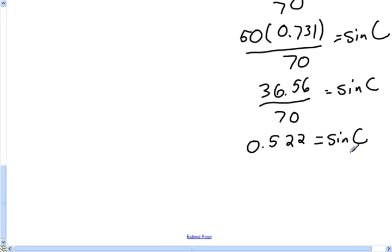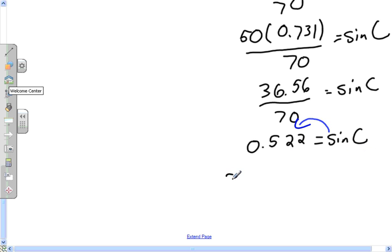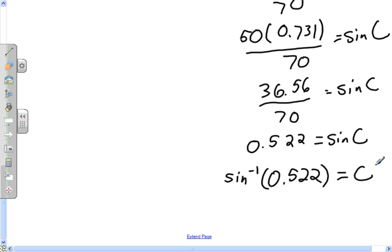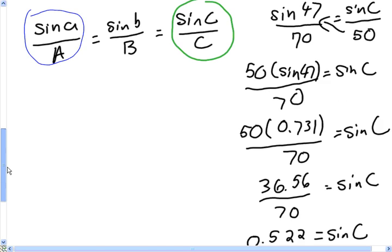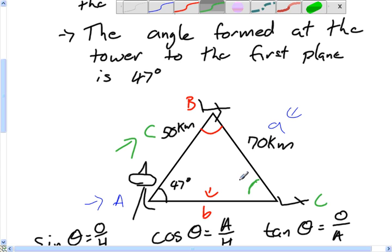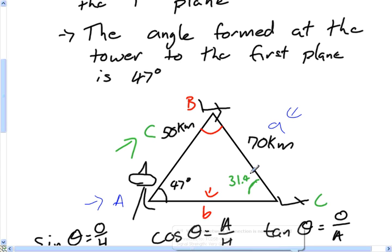I still have to isolate for Angle C, which means I need to bring Sign to the other side of the equation. So when I bring Sign to the other side, it is Sign inverse, Sign to the negative 1. Make sure you guys type that in when solving for an angle on your calculator. We use the inverse of Sign. So inverse Sign of this is 31.4. In other words, when I go back up to the top, I know my angle C is 31.4 degrees.